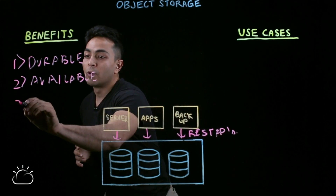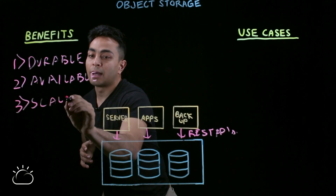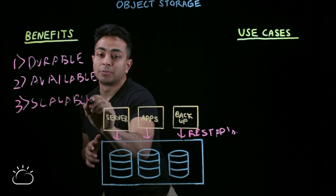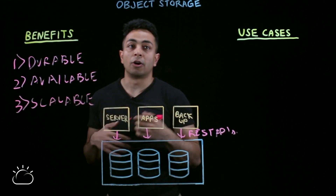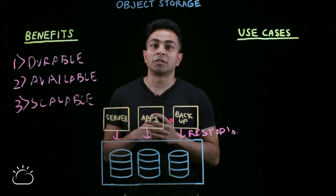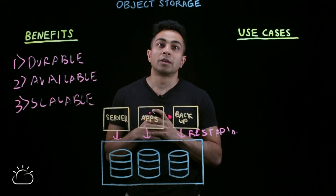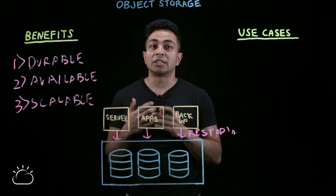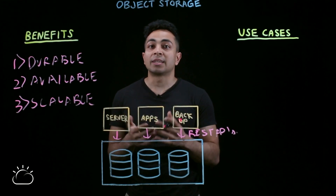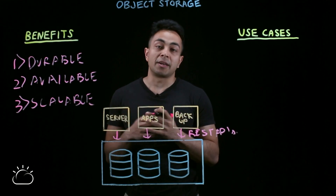The third one is scalability. If you take example of traditional systems like file or block, you normally have a lot of constraints on how much data you can store. Object store is meant to store petabytes and exabytes of data easily.